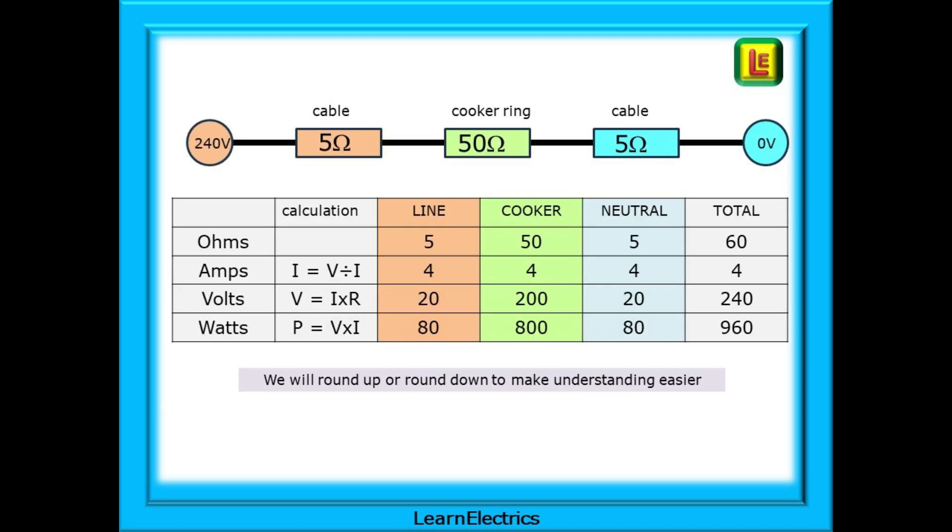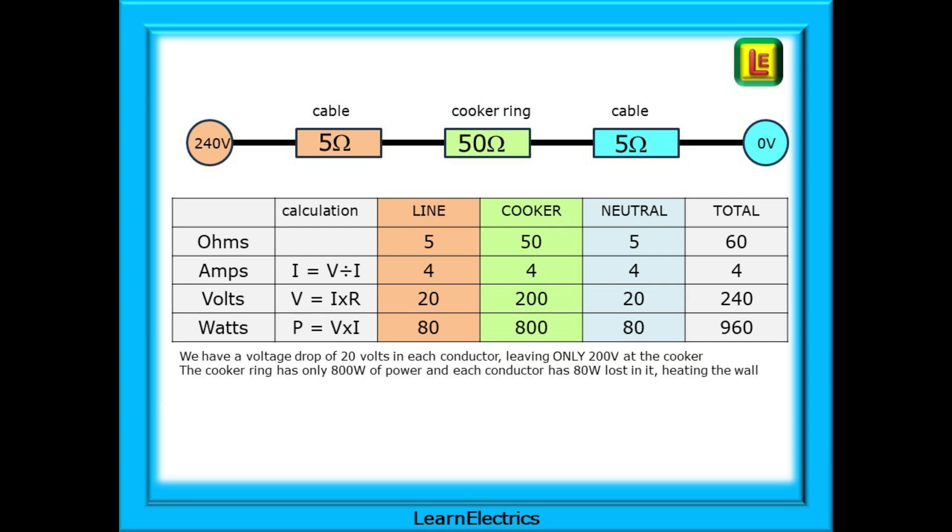This table shows the calculations that we've made. The current flowing through each part is the same at 4 amps, and we can now work out the voltage drop in the cables and across the cooker. Each conductor has a volts drop of 20 volts, 40 volts in total, leaving just 200 volts available at the cooker. This means that the cooker ring can only produce 800 watts of power, with 80 watts lost in each of the cables, just heating up the walls. The customer is paying for 960 watts of energy, but only actually getting 800 watts of useful power.